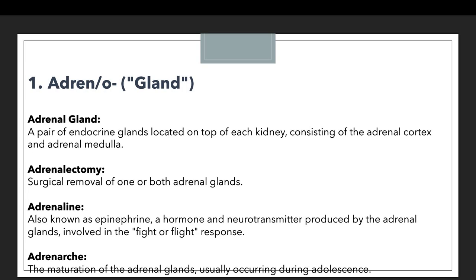Once you are comfortable identifying the actual meaning of a prefix, most of the information becomes clear. For example, if you know that adren relates to gland, then when you read adrenalectomy, it is immediately clear that something related to the gland is being removed through a surgical process. This is how we identify the terminology.